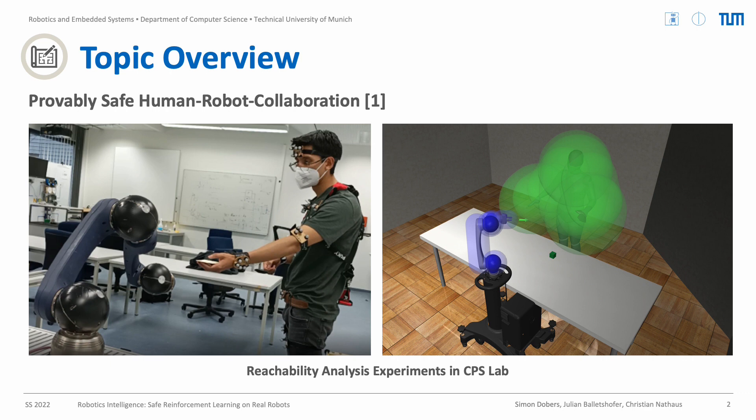We then verify whether those reachable sets intersect, and if they do, we execute a fail-safe trajectory which brings the robot to a complete stop before the human could ever reach it. In that way, we can provably guarantee safety for the human.